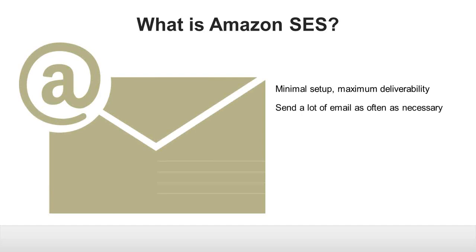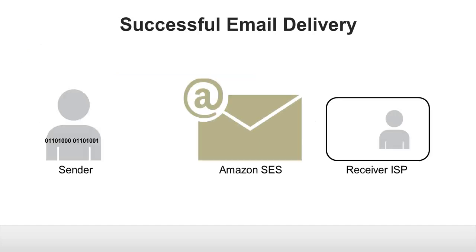You can send a lot of email as often as you need to. We build in all primary aspects of email management to let you focus on your core business. A client application acting as an email sender makes a request to Amazon SES to send email to one or more recipients. If the request is valid, Amazon SES composes an email message based on the request parameters and queues it for delivery. The message is routed over the Internet to the recipient's Internet Service Provider or ISP, which then delivers the message to the recipient's inbox.